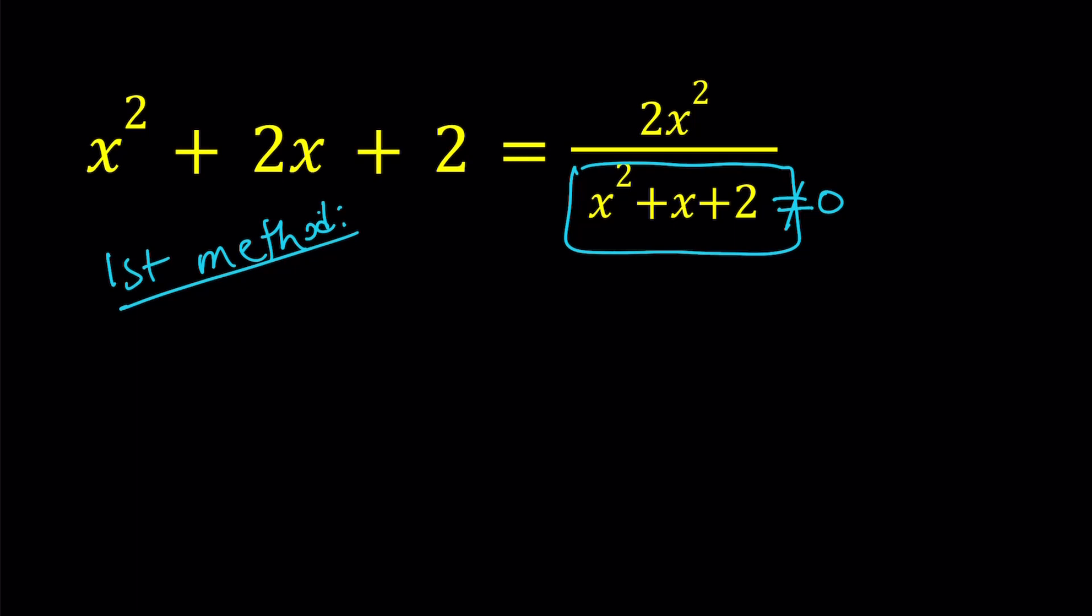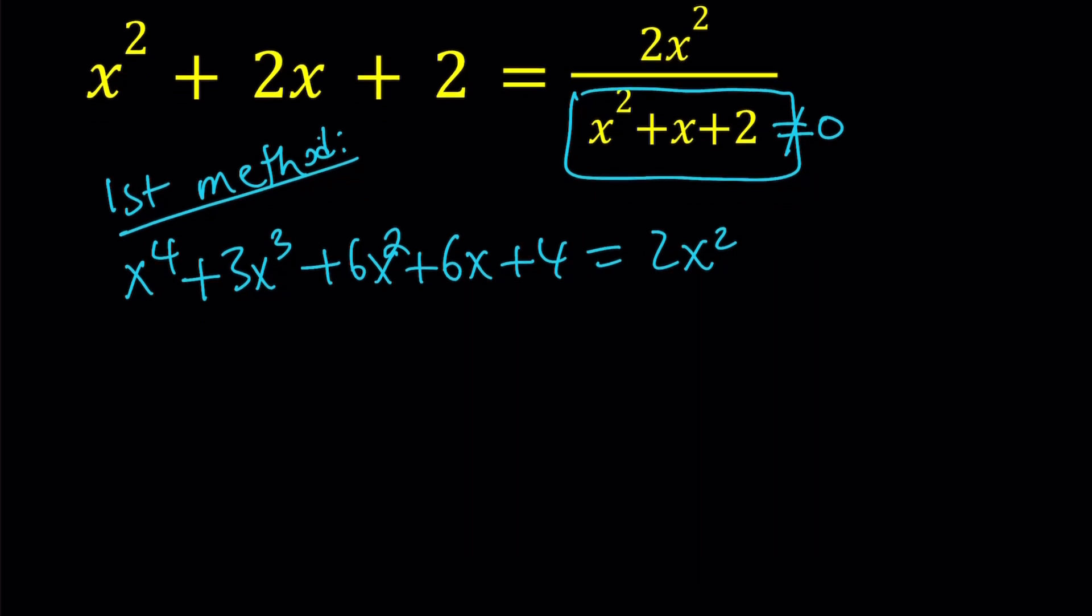If you distribute this completely, you're going to get the following. x to the fourth plus 3x cubed plus 6x squared plus 6x plus 4 equals 2x squared. And then let's go ahead and subtract 2x squared. x to the fourth plus 3x cubed plus 4x squared plus 6x plus 4 is equal to 0.